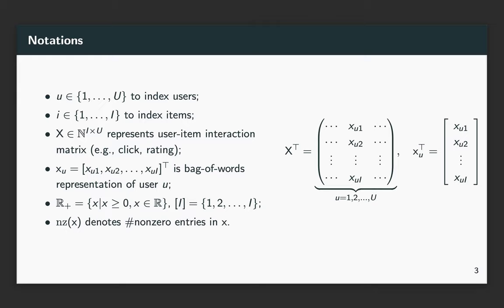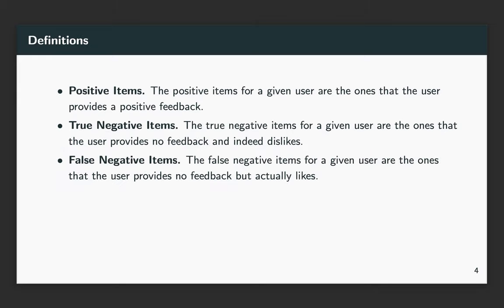Here are the notations and definitions we use throughout the paper. In particular, we highlight the false negative items as the items for a given user that the user provides no feedback but actually likes.